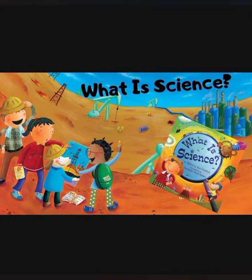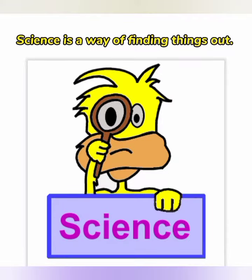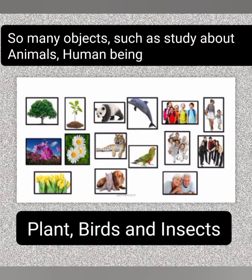Tell me, what is science? Science is a way of finding things out — like living and non-living things. And we study so many objects such as animals, plants, birds, and insects.